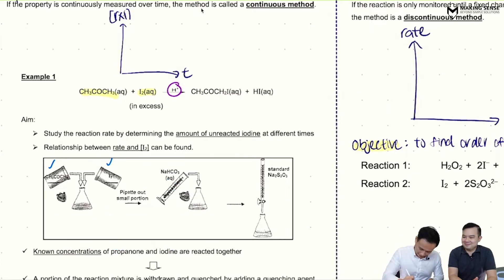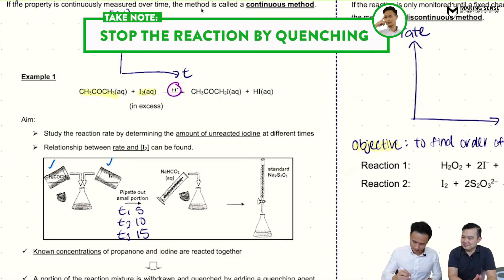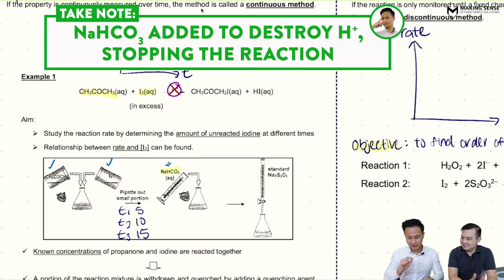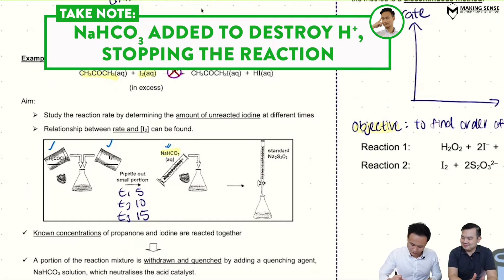So for example, these regular time intervals are T1, T2, T3. Let's say 5, 10, 15 seconds respectively. So at 5 seconds, I look at my stopwatch and 5 seconds has passed. I'm going to use the pipette. I'm going to sample out and take out a small portion. I'm going to add it into a conical flask. Now, what I'm going to do here is this. I need to make sure that the reaction stops. I need to stop the reaction. And how do I do that? We quench it. Quenching just means stopping by adding in sodium hydrogen carbonate, which is a base which destroys my H-plus via acid-base reaction. So my reaction stops.